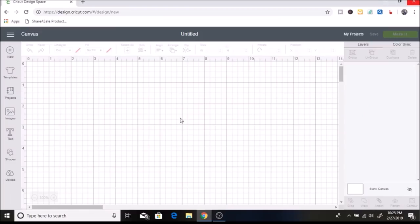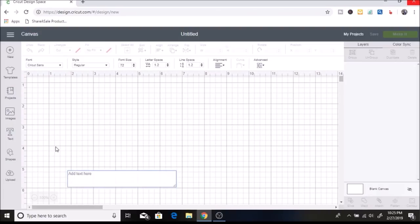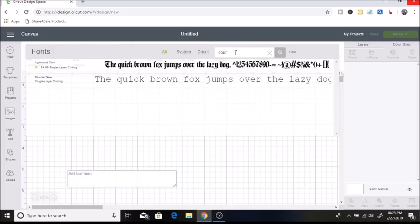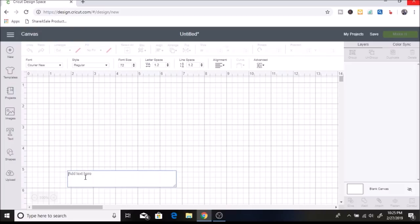On each book I am going to have a family member's name. I am going to click on text in Cricut Design Space and I am going to go up to font. I am going to be using Courier New. This is a really good font for farmhouse projects. I am going to select this and I am going to start typing in each of our names.